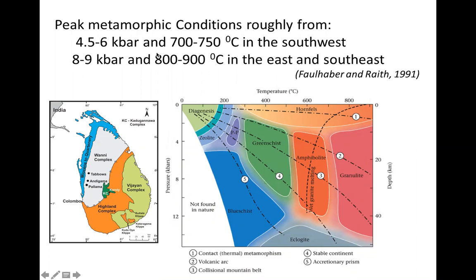In the high-temperature region and towards the moderate-to-high pressure side — if a rock has been metamorphosed under higher temperatures, normally greater than 700°C, and pressures above 4 kilobars — we term those metamorphic rocks as granulite facies. We also term them the highest grade, because in metamorphism, highest grade means highest temperature.